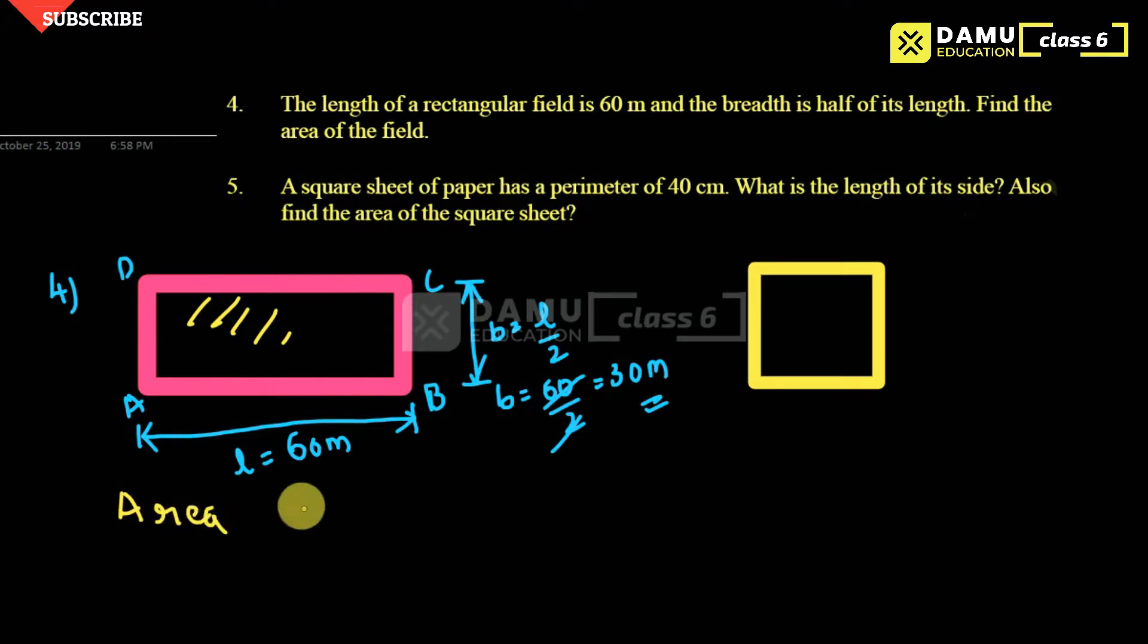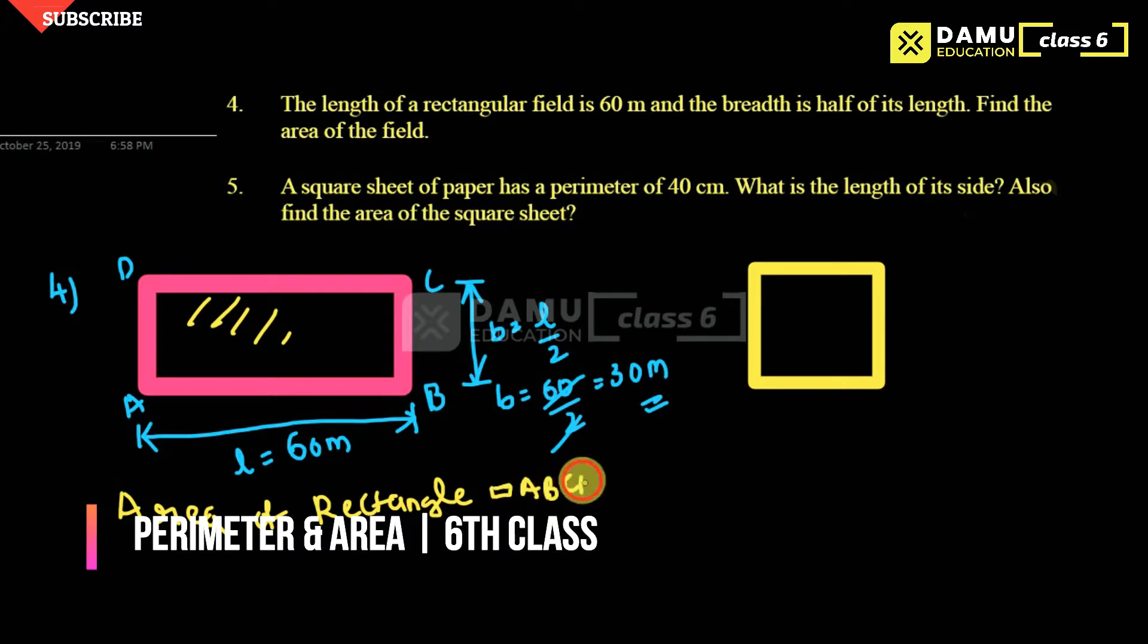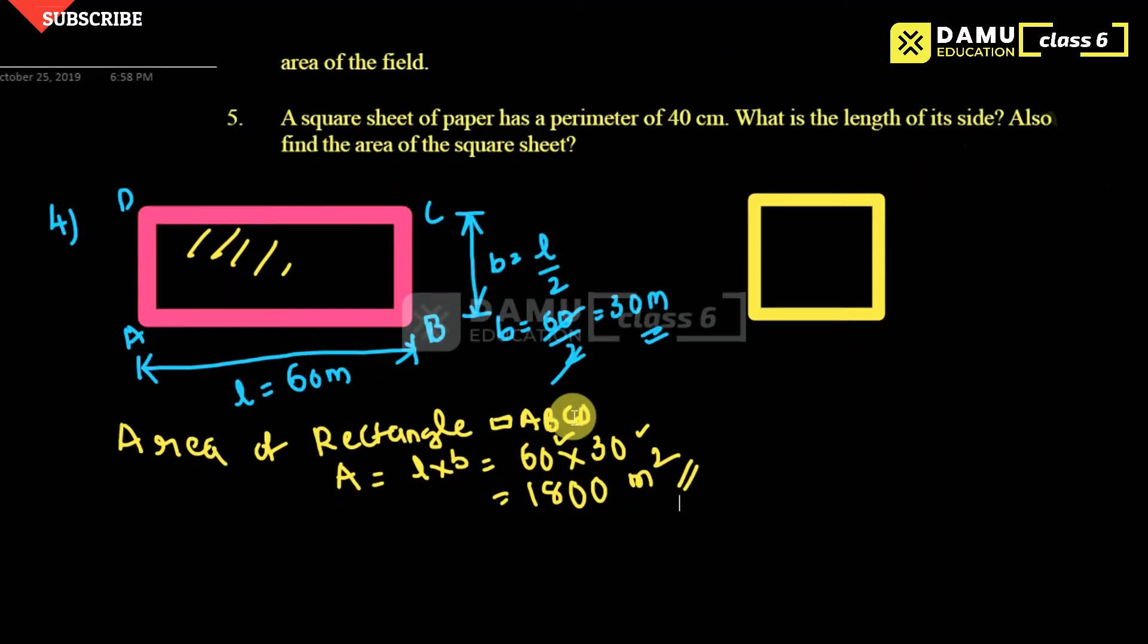So area of rectangle ABCD: capital A will be equal to length into breadth. Length is 60, breadth is 30. What are 6 threes? 18. Then two remaining zeros, write two zeros. Meter into meter equals meter square. So you can write 1800 square meters or 1800 sq. meter.